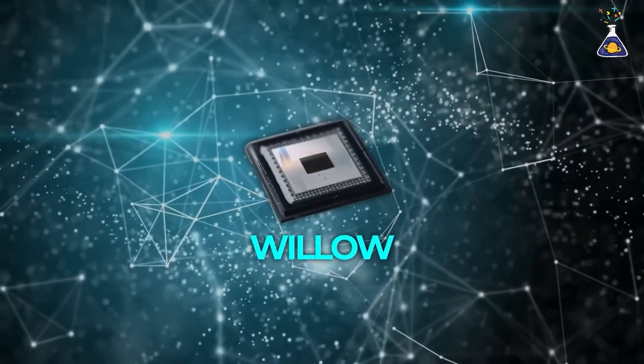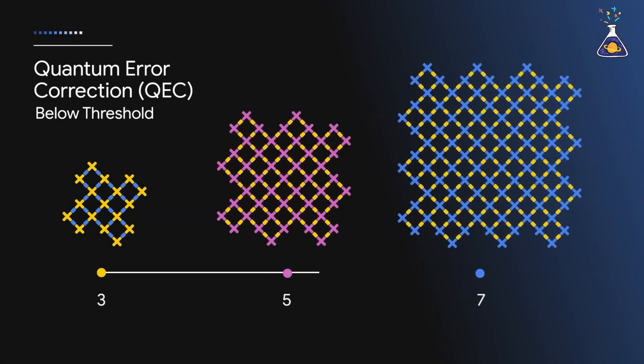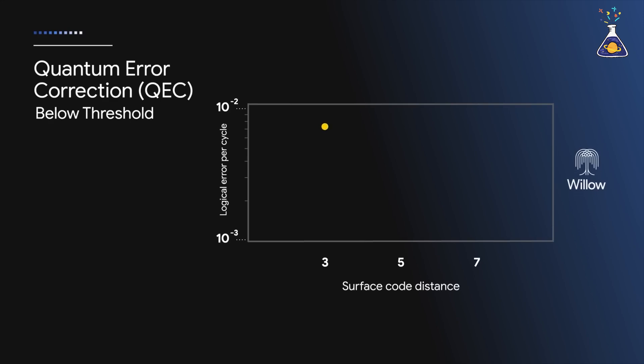Here is why Google's Willow has captured so much attention. Google announced that as Willow's qubits expanded into 3x3, 5x5, and 7x7 configurations, error rates actually decreased by half. If this announcement holds true, it suggests the more qubits are added, the more stable quantum computers could become.